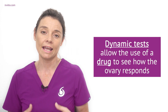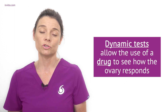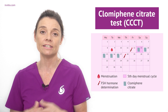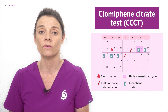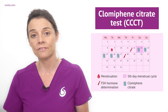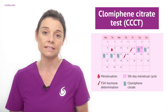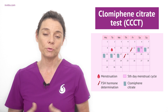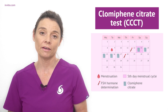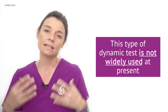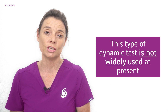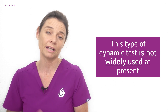The clomiphene citrate test allows us to use a drug to see how the ovaries respond to ovarian stimulation. Clomiphene citrate is administered for five consecutive days, usually starting at day five of the menstrual cycle. The FSH levels are monitored before and after the clomiphene citrate is administered to see the effect it has had. An abnormal test result such as a very high FSH level would indicate a low ovarian reserve. However, this test is not widely used because it is more invasive — you need to take the medication — and taking any medication has possible adverse effects.